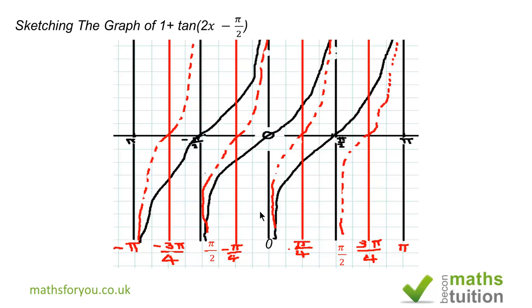If we forget the one for now and concentrate on tan(2x - π/2), we know that the ordinary tan x graph is valid between -π/2 and π/2. That gives us a period of 180 degrees. So if we now say that 2x - π/2 is greater than -π/2 but less than π/2.